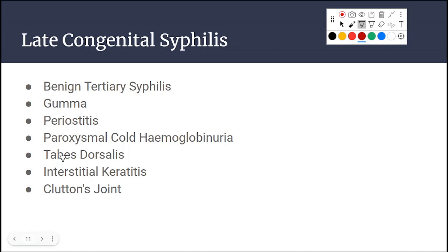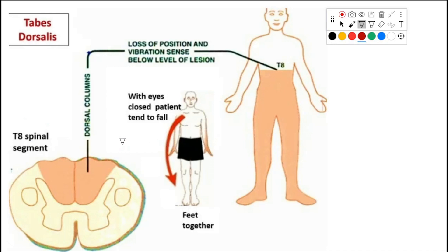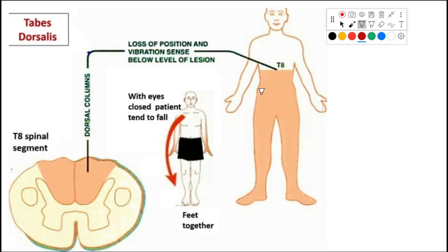Tabes dorsalis is a neurological condition that occurs when late congenital syphilis involves the nervous system. It typically affects the dorsal columns of the spinal cord, resulting in loss of position and vibration sense below the level of the lesion.